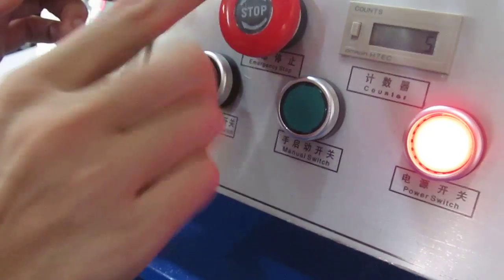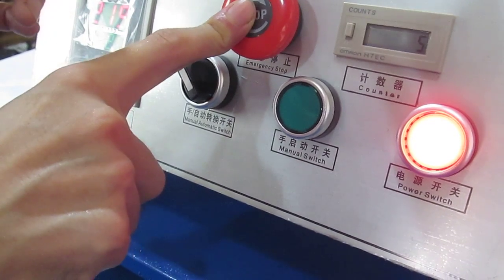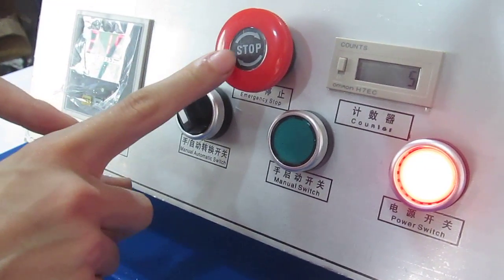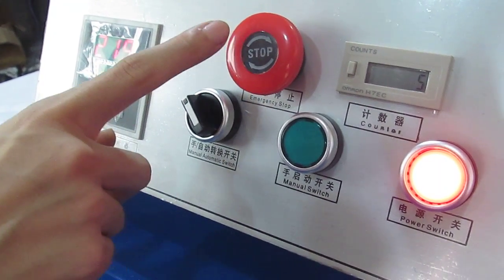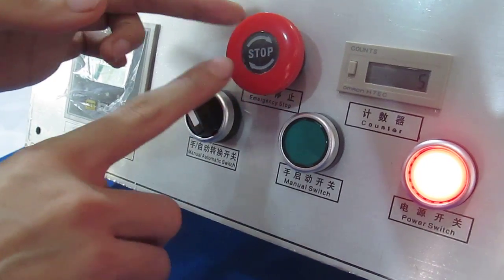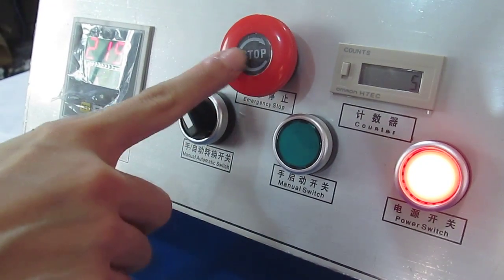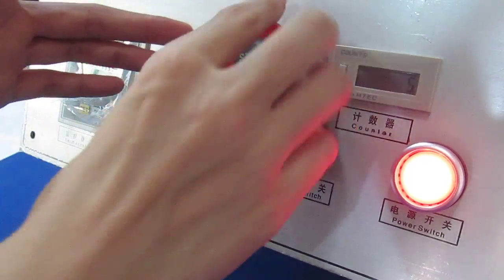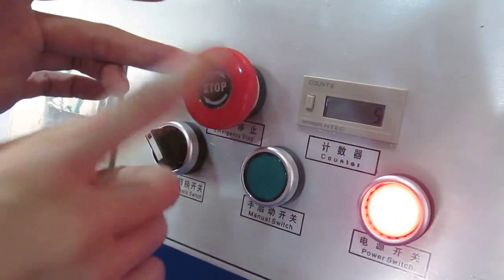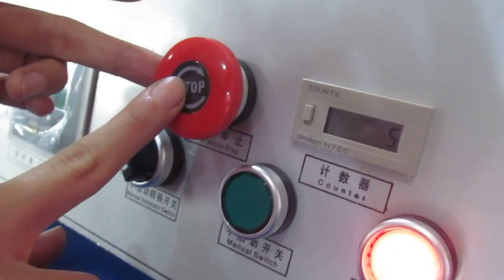And this is the emergency button. If something happens, you have to press this button to stop the machine printing. If you want to re-press the machine, you have to clockwise press this button. The button will bounce back.